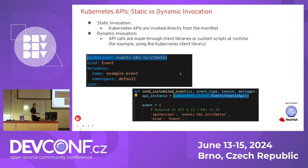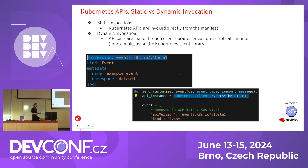Let's discuss how APIs can be used from within an application, because there are actually two ways of invocation. You have a typical static invocation, shown on the left — the deprecated API is used directly from a manifest at the moment of deployment. Usually all tools concentrate on this first case, as I'll discuss when reviewing existing solutions.